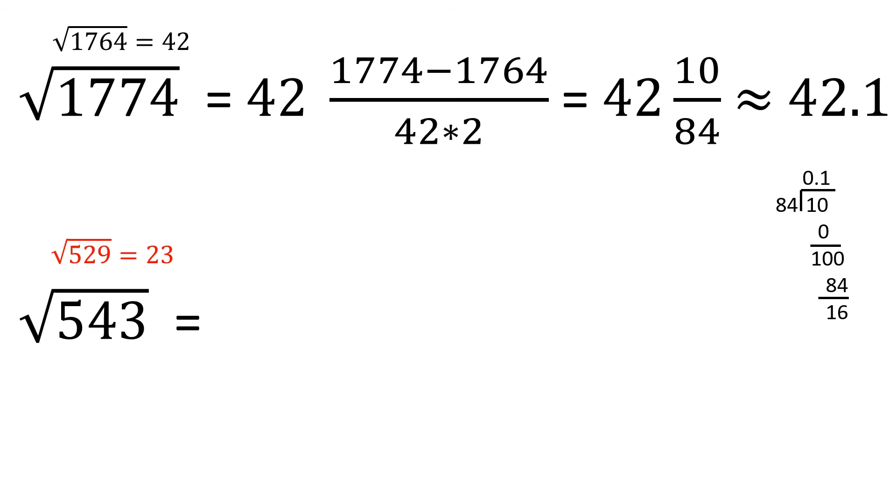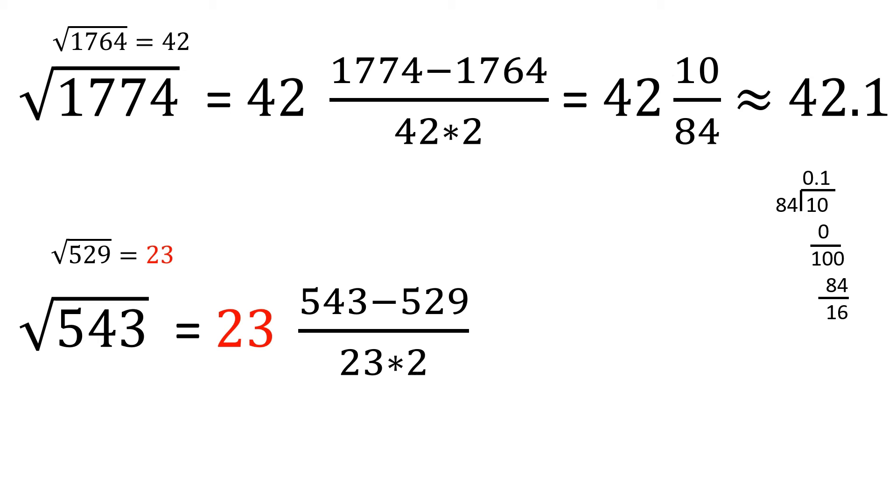The square root of 529 is 23. We will have 23 in our solution. Let's calculate the decimals.